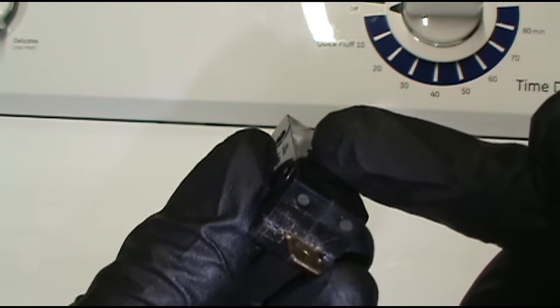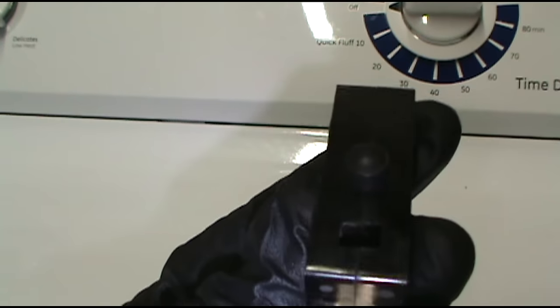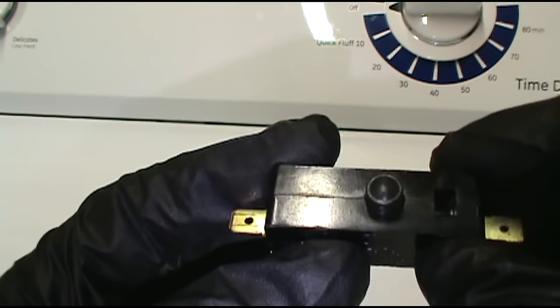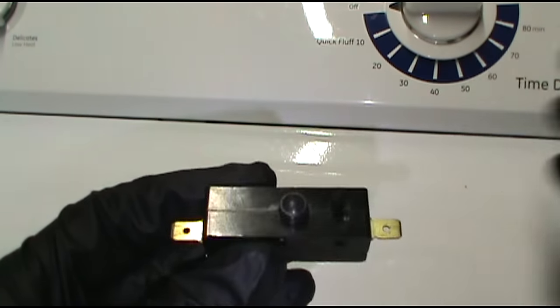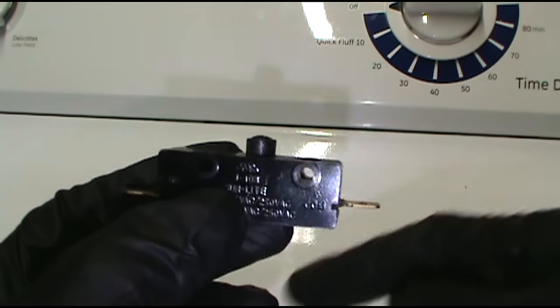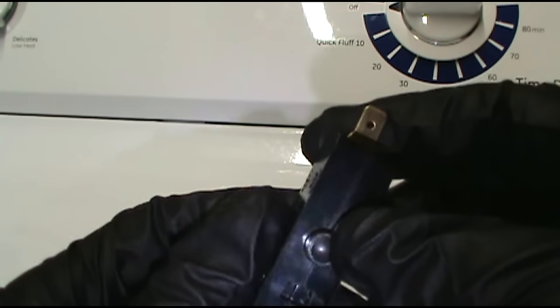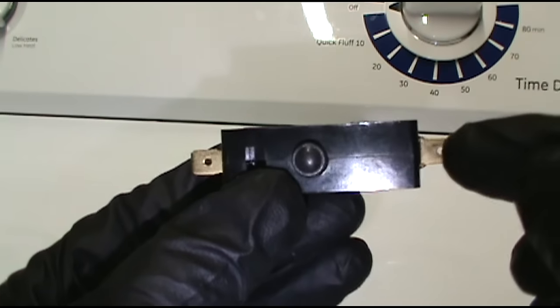These GE dryers have these switches and the pulley connects that switch. So if the belt breaks, it breaks connection and shuts the dryer off. So if your drum is spinning and everything checks out and you're like what is going on, check this switch. It's down to the left under the drum. I'll show you where it is when I take it apart and how to test it.